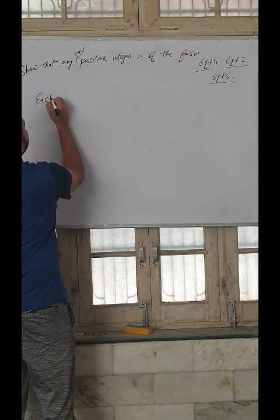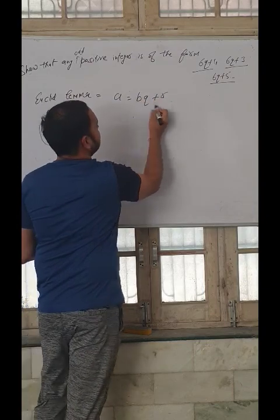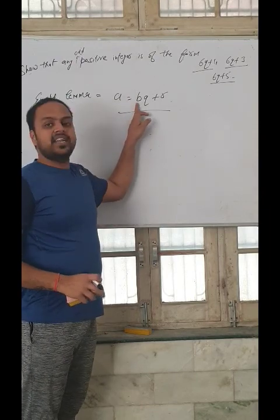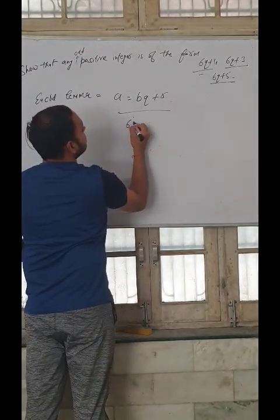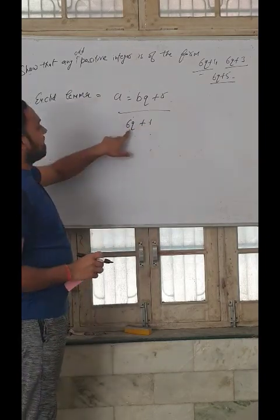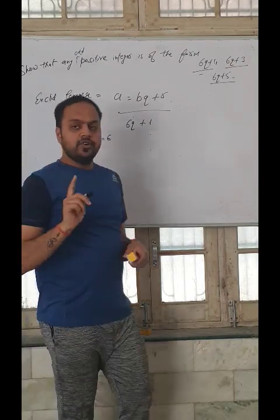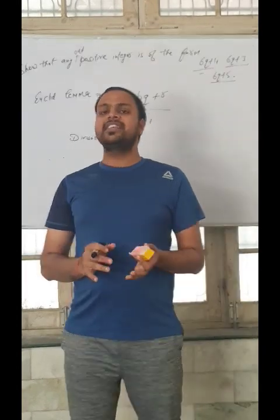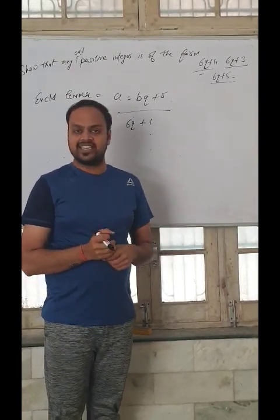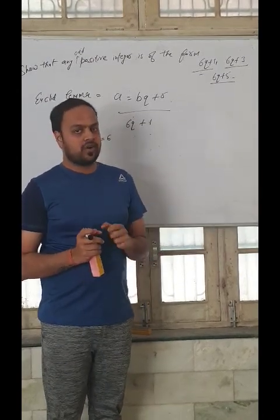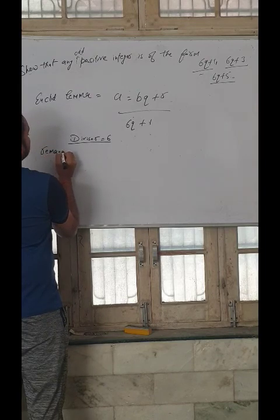Let's take Euclid's Lemma. So Q was the quotient and R the remainder.